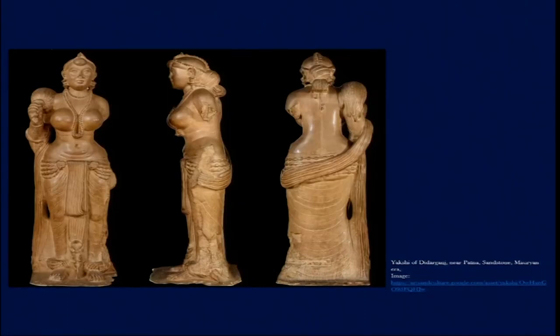There is also a particular way of handling material in the Mauryan context. We have a figure identified either as a Chauri bearer or a Yakshi, found from Didarganj near Patna and now kept in the Patna government museum. This is a near life-size sculpture of a woman holding a fly whisk in her right hand, suggesting she is serving either a royal or a deity. Her identity is unclear — whether she is a Yakshi figure, who make frequent appearances in Buddhist sculptures.